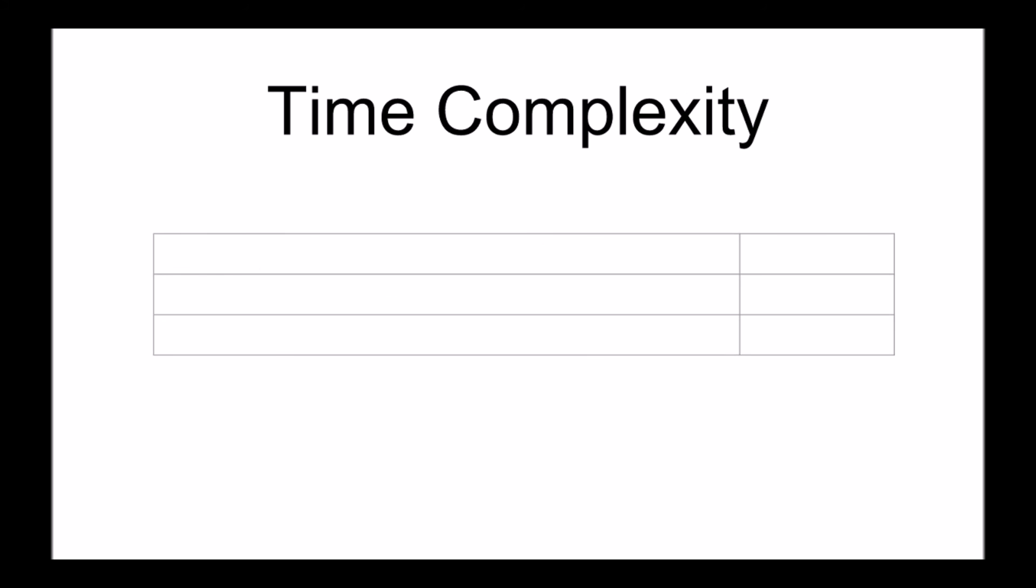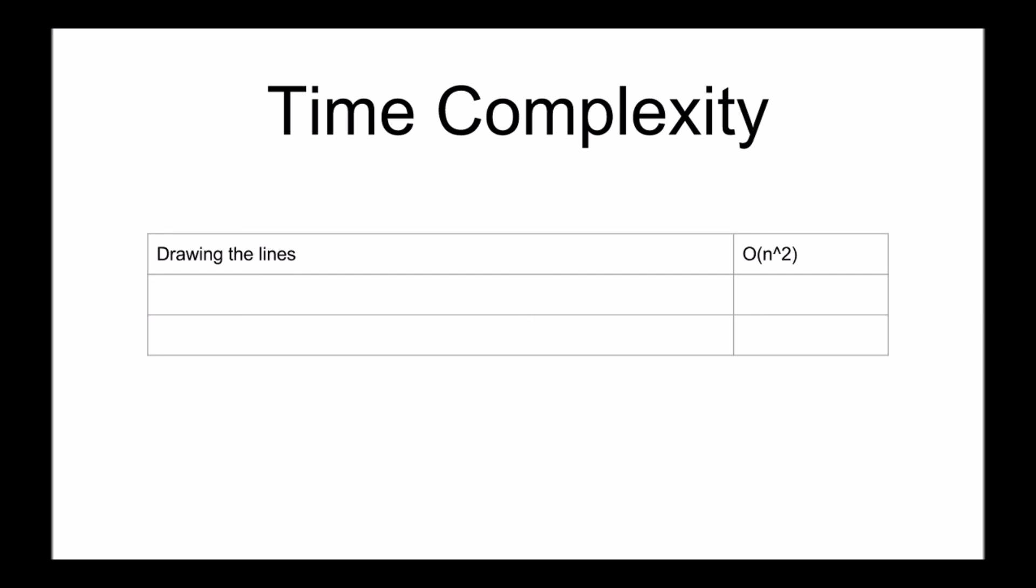With most algorithms, the time complexity can be worked out by looking at how many times it loops, and the cost of each loop. In our case, the loop consists of drawing the lines, taking n squared time, checking there is enough lines, n time, and reducing by the smallest uncovered number, n squared time. This loop will repeat a maximum of n squared times, giving us a total time complexity of n to the 4.